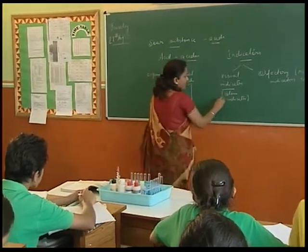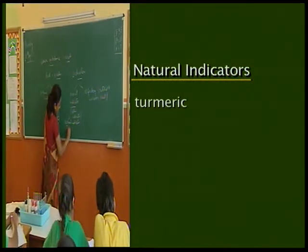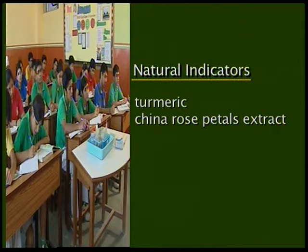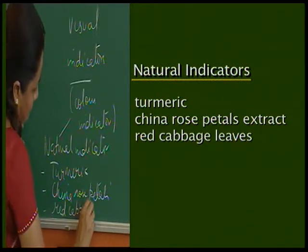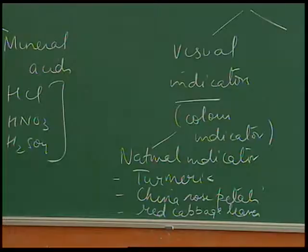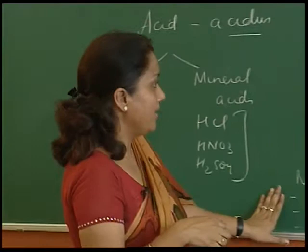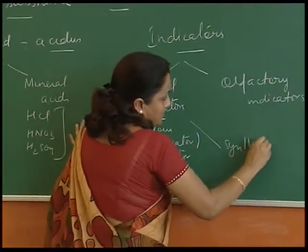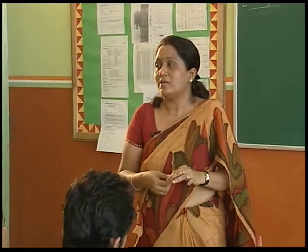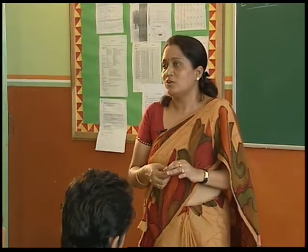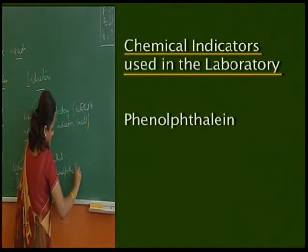Natural visual indicators include turmeric, china rose petal extract, and red cabbage leaves. You may already know these from class 7. There are also certain synthetic indicators — chemicals that don't occur naturally but can be used to test whether a substance is acidic, basic, or neutral. Two such indicators commonly used in the lab are phenolphthalein and methyl orange.